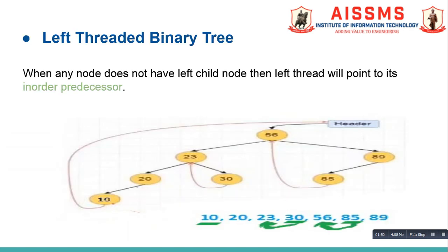Now let us understand left threaded binary trees. In this figure you can see node 56 has both left and right child nodes. Node 23 also has both left and right child nodes. Node 20 has only a left child. Node 10 does not have left as well as right child nodes, so we can create a left thread for node 10.